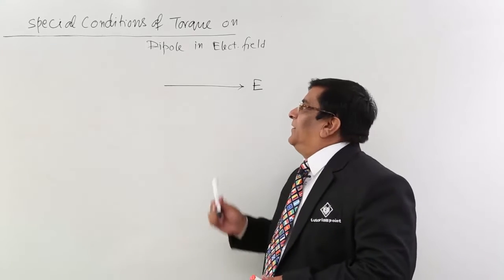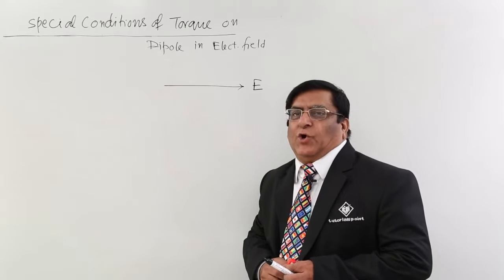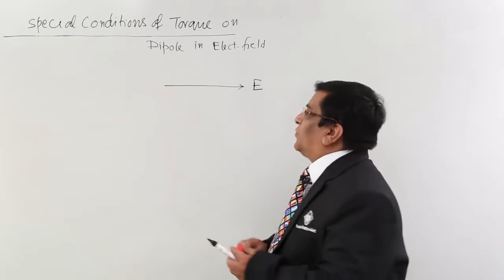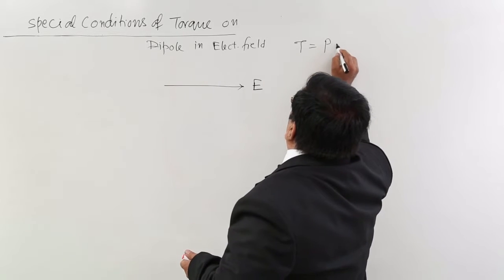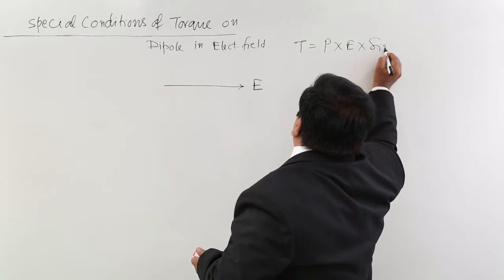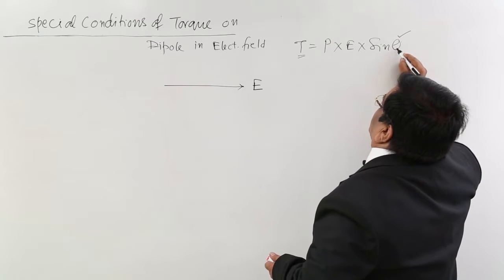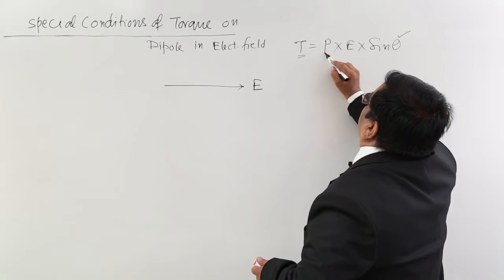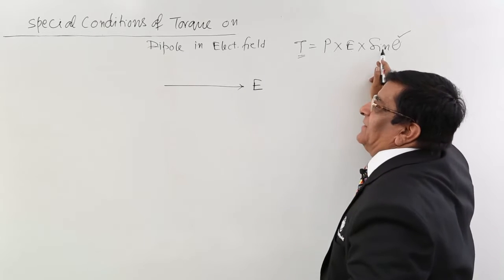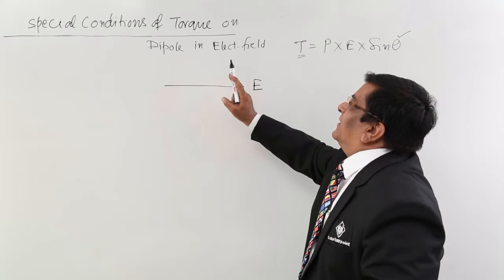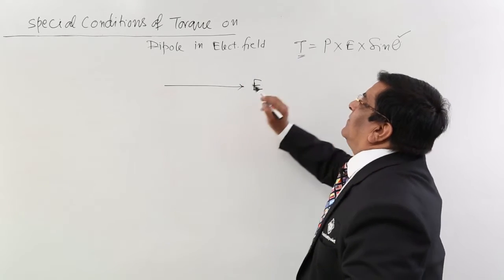Now we will study: if a dipole is placed in an electric field, it experiences a torque. This torque has the relation τ = P × E × sinθ. This is a variable torque because theta may change. Even if P and E are not changing, theta is changing, so the torque will keep on changing. Today we will study the special conditions for the torque and how it changes in an electric field.